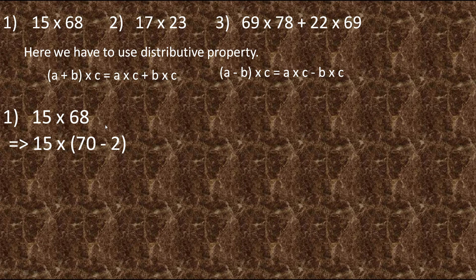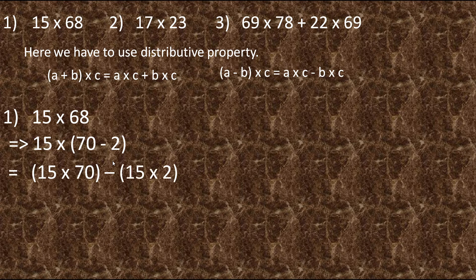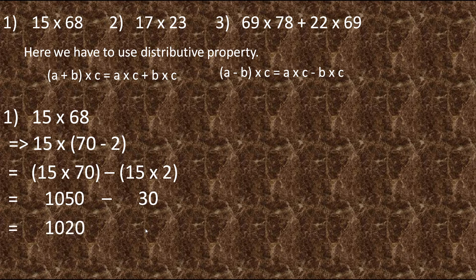We multiply the multiplier with each number: 15 into 70 minus 15 into 2. For 15 into 70, we know 15 times 7 is 105, so putting the zero at the end gives 1050. Minus 15 into 2 is 30. Subtracting gives us the answer 1020.